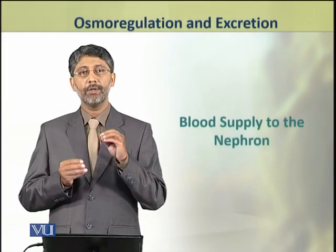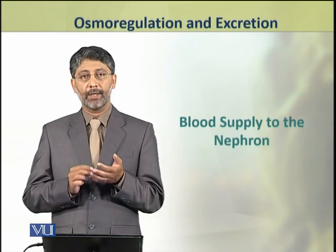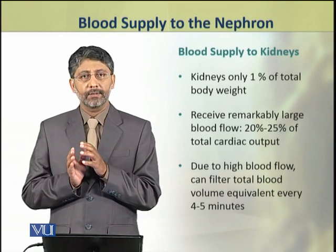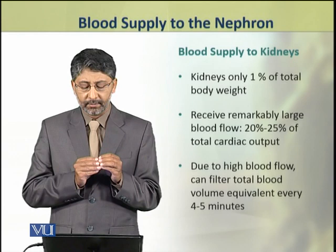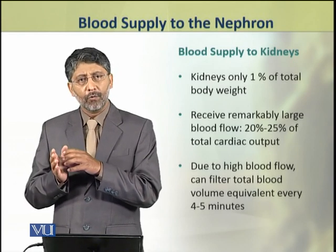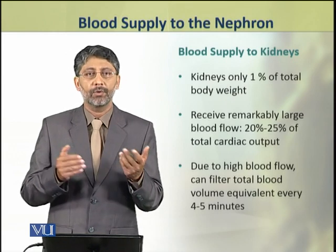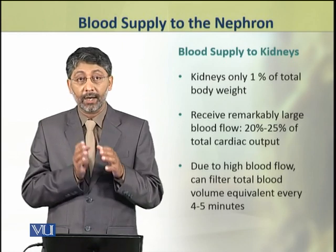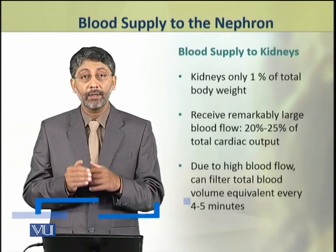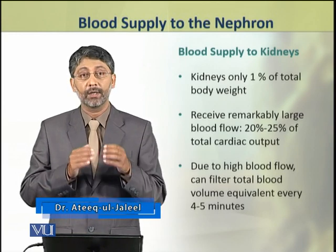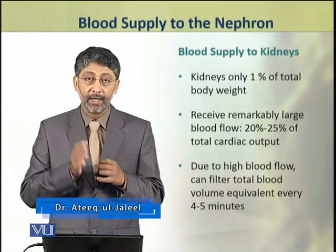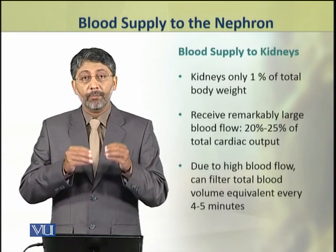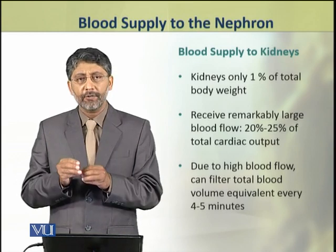Dear students, in this topic we shall discuss the blood supply to the nephron. The kidneys are very small organs which have only one percent weight as compared to the total body weight. However, they receive a remarkably large blood flow — about 20 to 25 percent of total cardiac output. Due to this high blood flow, kidneys can filter the total blood volume equivalent every four to five minutes.